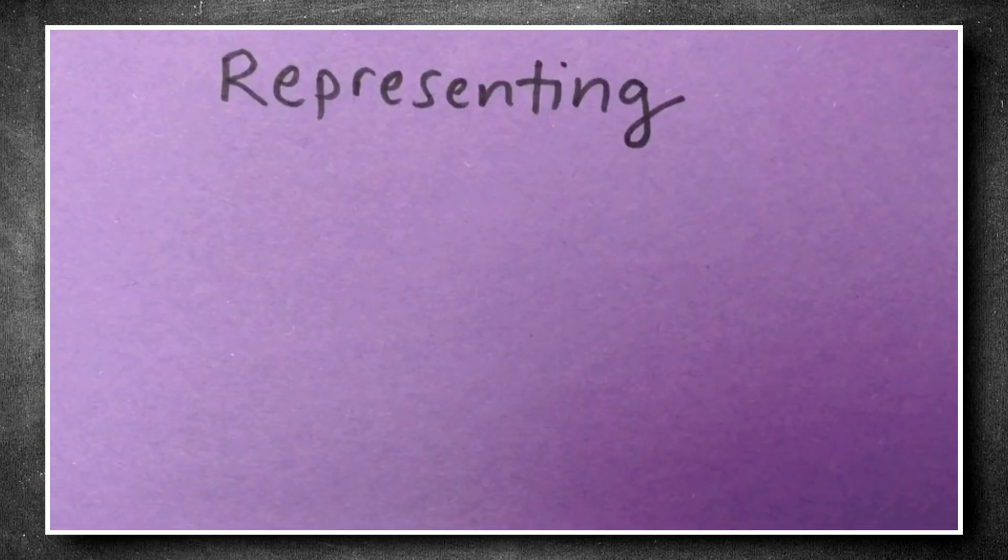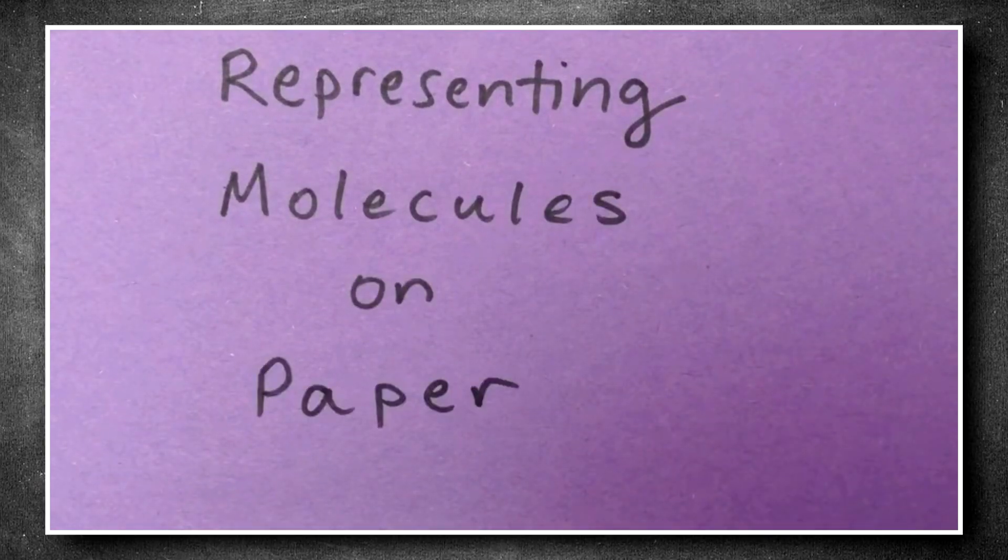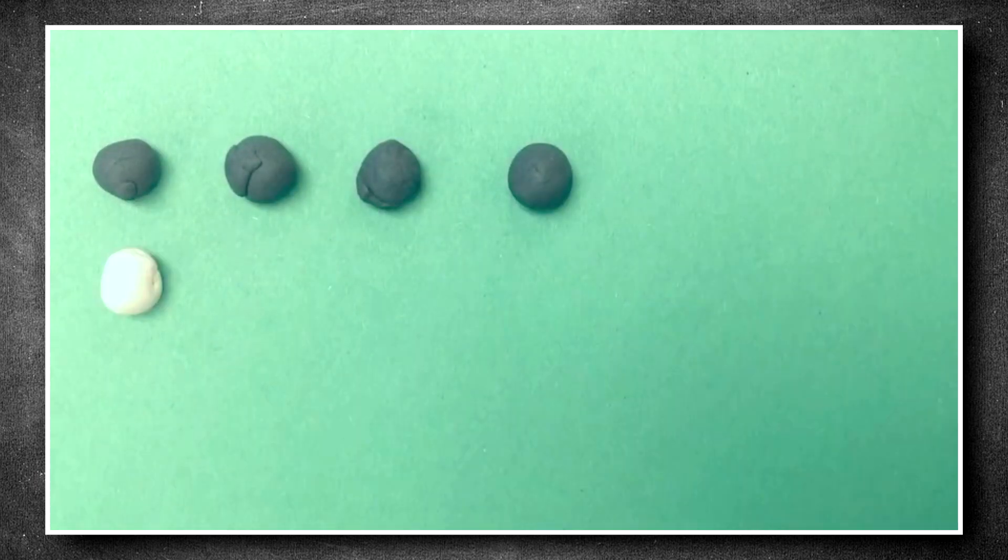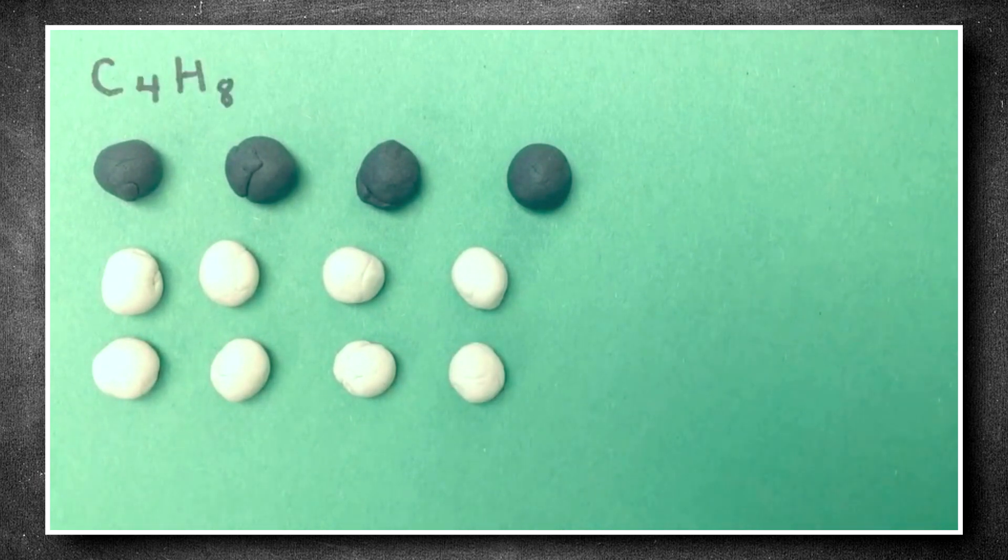In this video, you'll learn how to represent molecular structures on paper. We'll start with an organic molecule containing four carbon atoms and eight hydrogen atoms. The molecular formula is written C4H8.